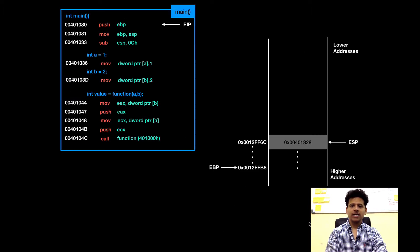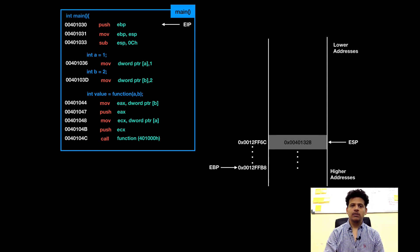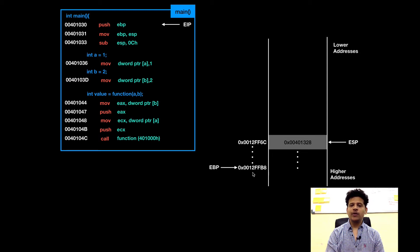Let's start the execution from main. This is our assembly code and this is our stack. Currently ESP is pointing at 0012FF6C and that has the value 00401328, which is the return address of the function who called main. We are starting execution from main and our EIP is pointing at the instruction push EBP. EBP is currently at 0012FFB8, which contains the value of the stack frame pointer who called main.